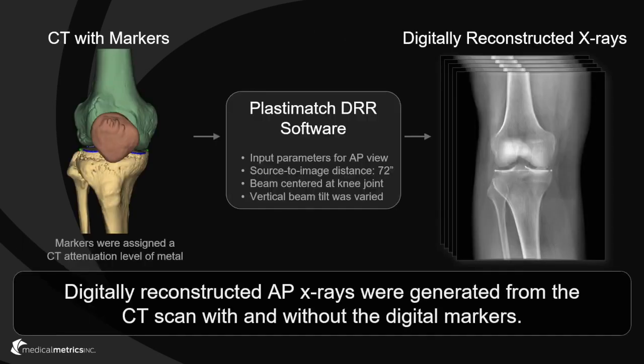Digitally reconstructed anterior-posterior radiographs were generated from the CT scan with and without the digitally added markers. The markers were assigned a CT attenuation level of metal. Digitally reconstructed radiographs were created with the PlastiMatch software, using parameters of typical knee radiographs.